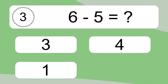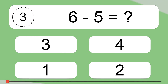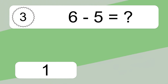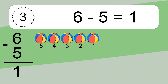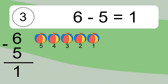6 minus 5 equals what? 6 minus 5 equals 1. Let's count it: 5, 4, 3, 2, 1.